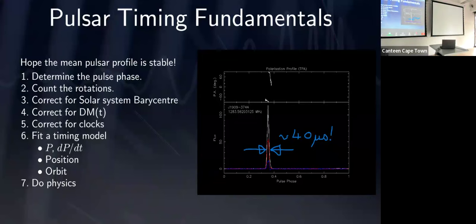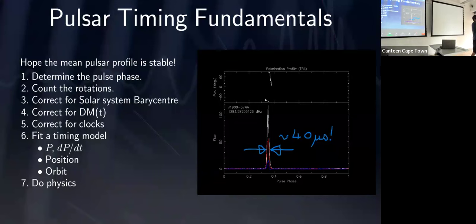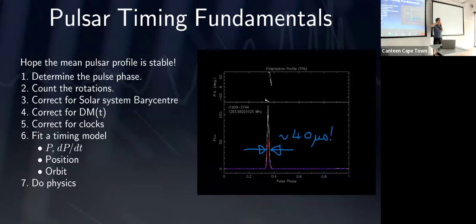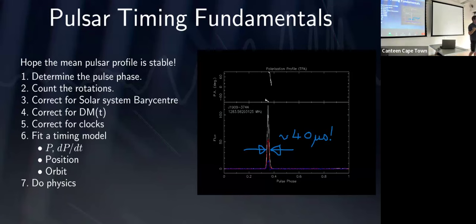So why am I here? I study gravity using pulsar timing. Every time that beam goes past the Earth you get a pulse — here's a genuine one from MeerKAT, from PSR 1909-3744, discovered at Parkes by Brian Jacoby about 20 years ago. It has a hyper-narrow pulse that only takes 40 microseconds to cross the MeerKAT telescope. Because of that, you can determine when this pulse hits the telescope to about 100-nanosecond accuracy every time you look at it — 100 nanoseconds is about 30 meters of light travel time.